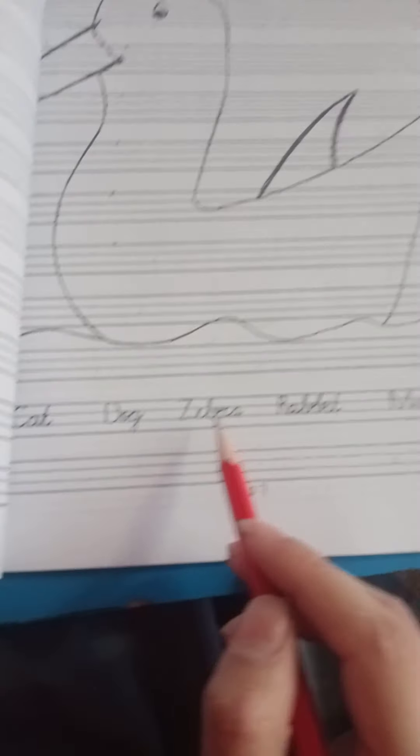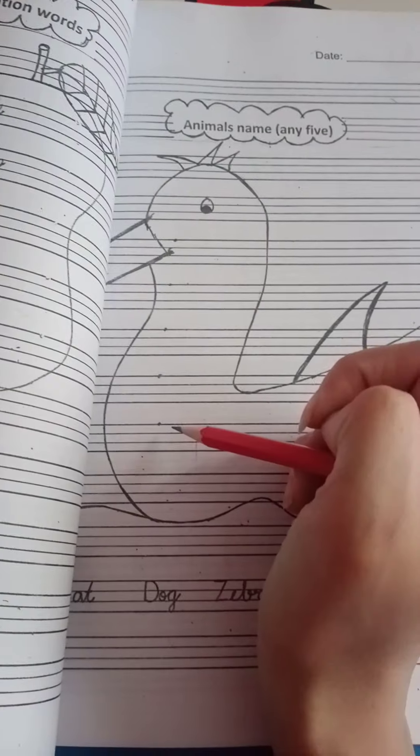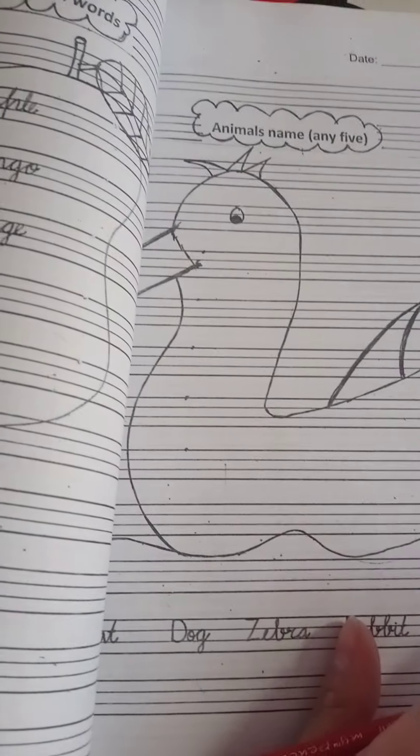Cat, dog, zebra, rabbit, monkey. Here we can write the names and remember the names.